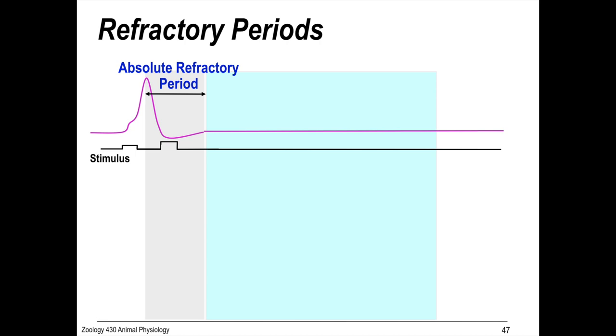But after some time, you'll see that with a bigger stimulus, you can get a smaller action potential formed. So, you need more current, more stimulus for reduced amplitude output. That's called the relative refractory period.